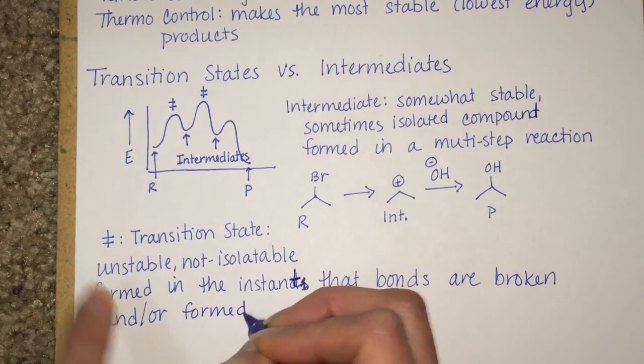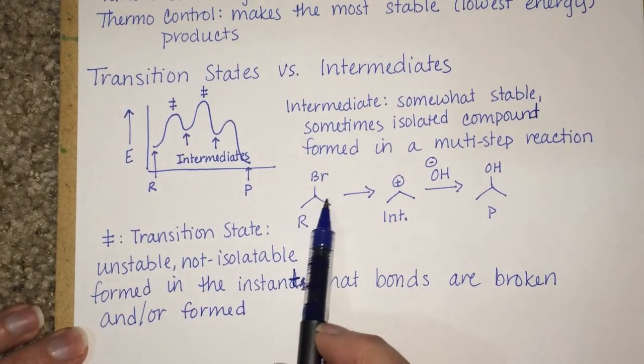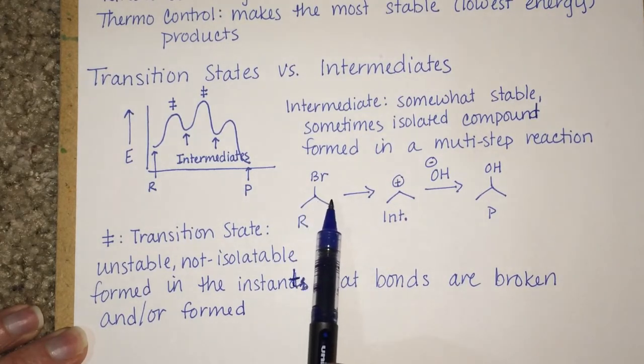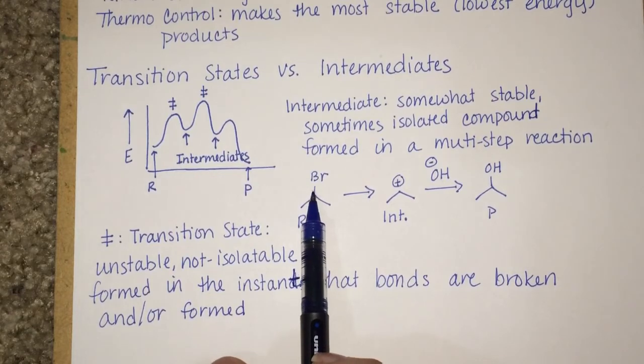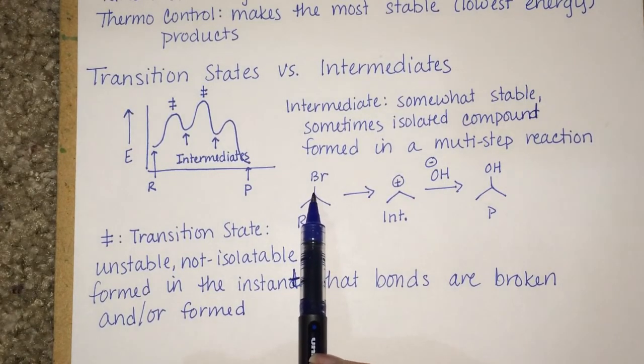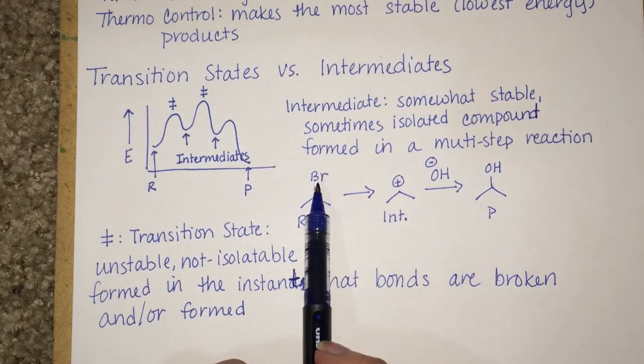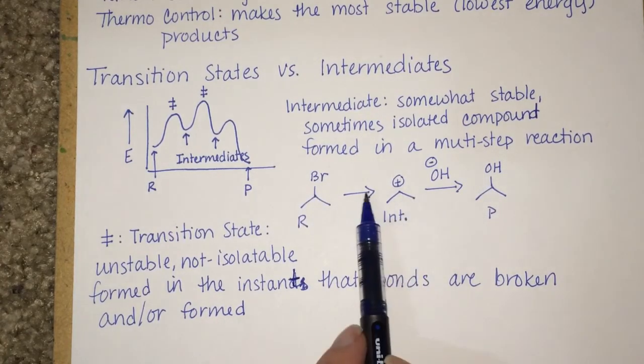So the transition state, which we can't really draw easily, would be the point where this carbon-bromine bond is right on the verge of breaking. The moment that that bond is being broken is the transition state. That would be one of them.